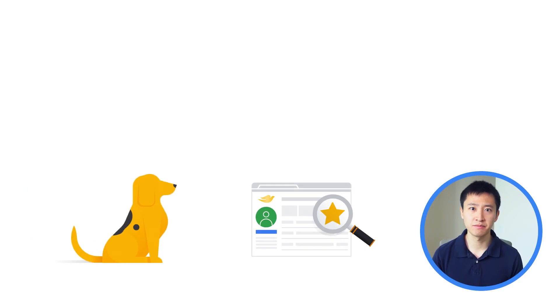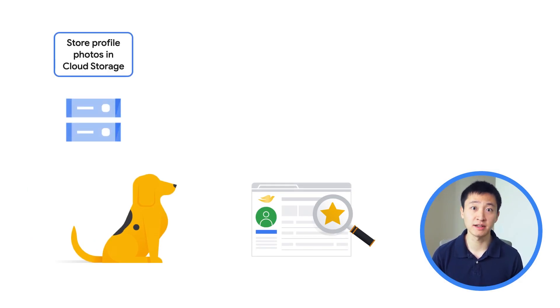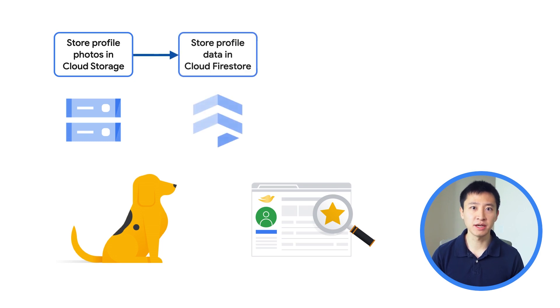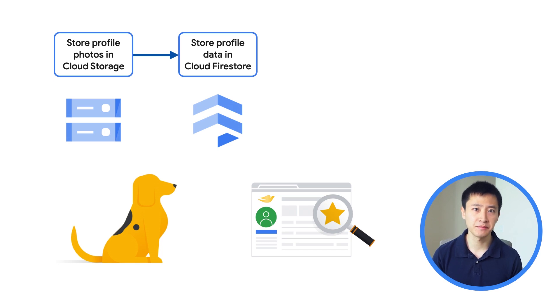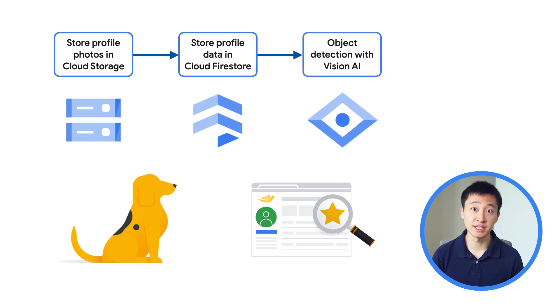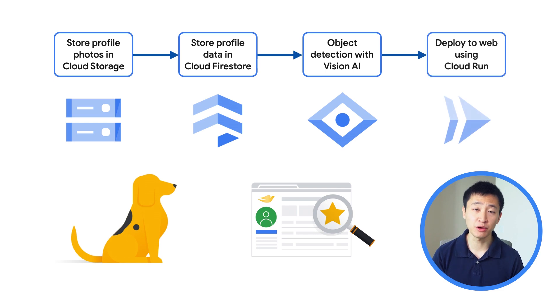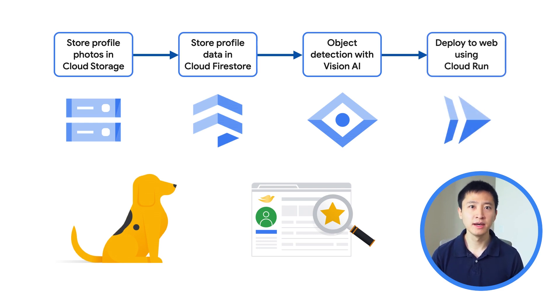One great aspect of Google Cloud is the opportunity to seamlessly integrate multiple products to suit your own unique use case. Say that you're building a new social networking site for dogs. You could start out by storing profile photos in Cloud Storage. Then you could set up a Cloud Firestore database to store other profile information like dog names, locations, and hobbies. Next, you could use Vision AI to detect objects in each photo like balls, stuffed animals, and bones. These machine learning-powered data insights might help your users find other furry friends with similar interests. And finally, you could deploy your application to the web using Cloud Run, which would make it easy for your app to scale automatically as you gain more users.